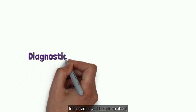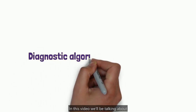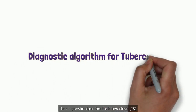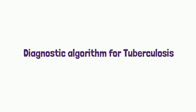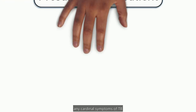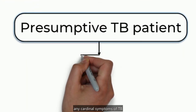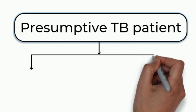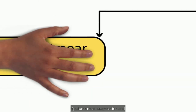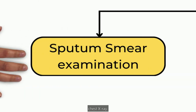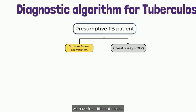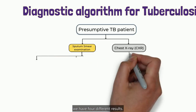Hello everyone. In this video we'll be talking about the diagnostic algorithm for tuberculosis. When the patient presents with any cardinal symptoms of TB, he or she would be undergoing sputum smear examination and chest X-ray, following which we have four different results.